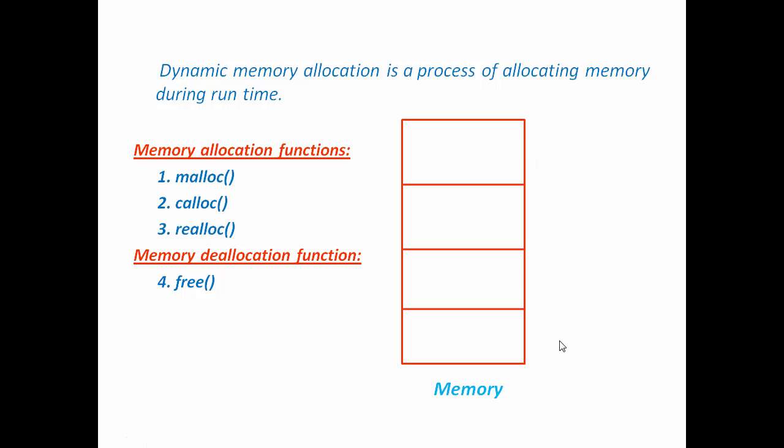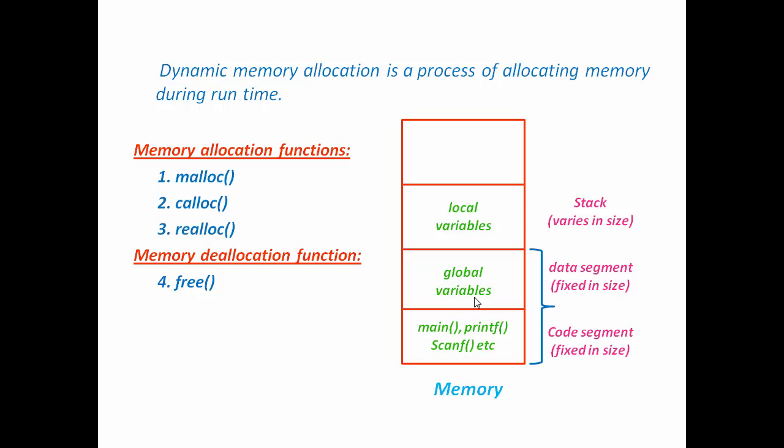One segment is assigned to store C instructions like main, printf, scanf, etc. Another segment is used to store global variables. Global variables are the variables that are not declared inside any function, and these variables can be accessed from anywhere in the program during the lifetime of the program. Third section is reserved for function calls and local variables and we can call it as stack. Local variables are the variables that are declared inside a function and their lifetime is until the function is executed. These two segments are fixed in size but stack alters size as the program executes.